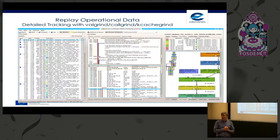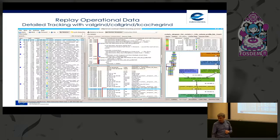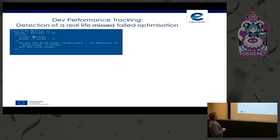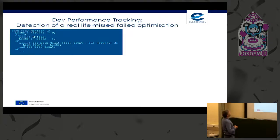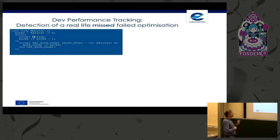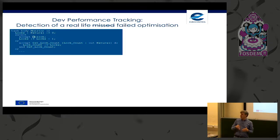Another important use of tracking is verifying that what we believe is an optimisation actually is one. Here is a real-life example of a missed optimisation — something we tried to optimise — that became a failed optimisation, a pessimisation.